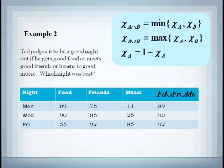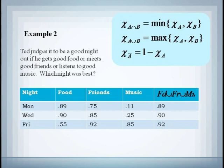Our second example uses the Union operand. Ted says he has a good night if he gets good food or meets good friends or listens to good music. Three fuzzy sets joined by the connective OR, which correspond, of course, to Union.